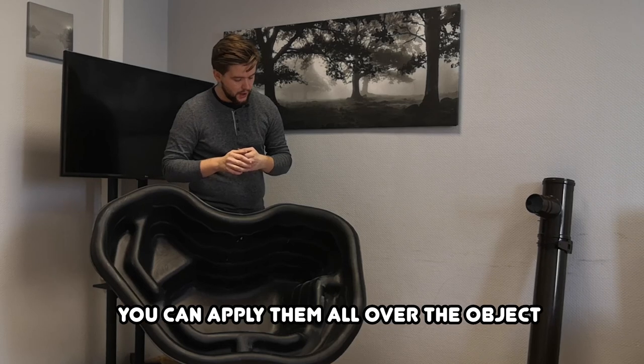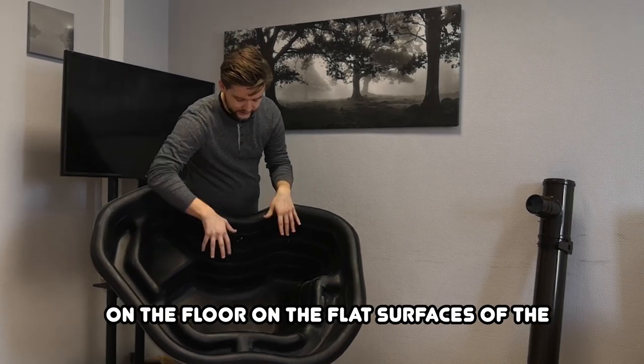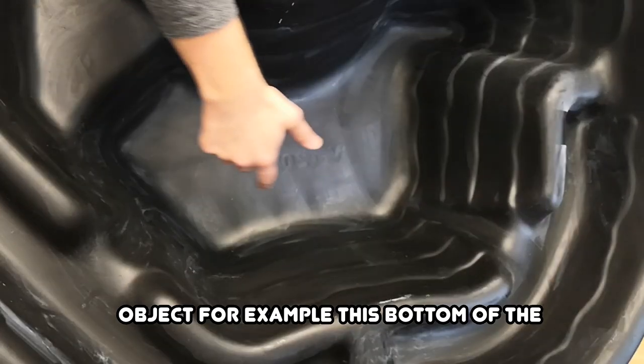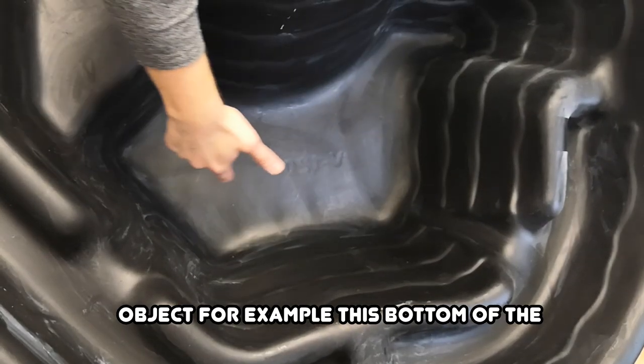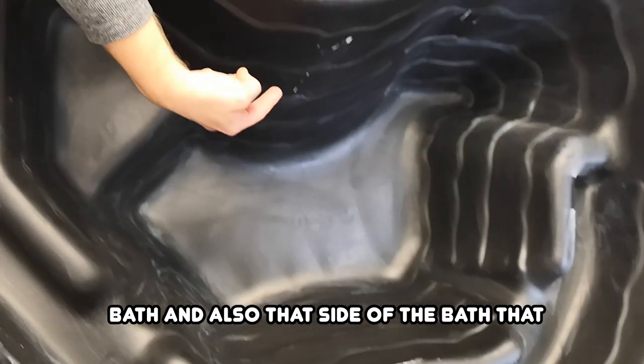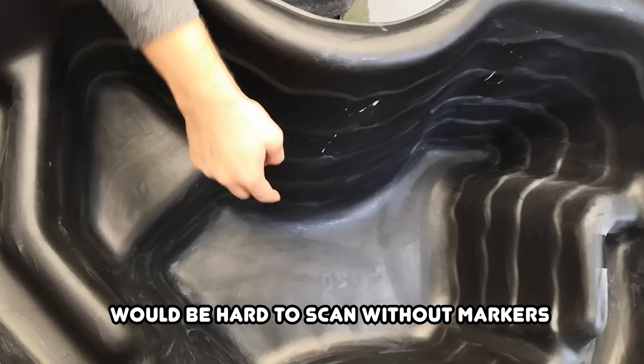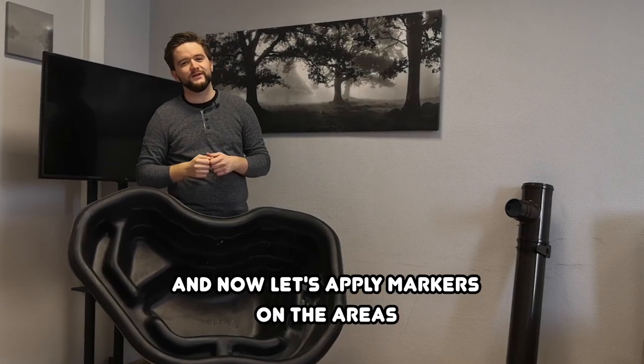For example, you can apply them all over the object, on the floor, on the flat surfaces of the object. For example, this bottom of the bath and also that side of the bath that would be hard to scan without markers. And now let's apply markers on the areas that lack distinct geometry.